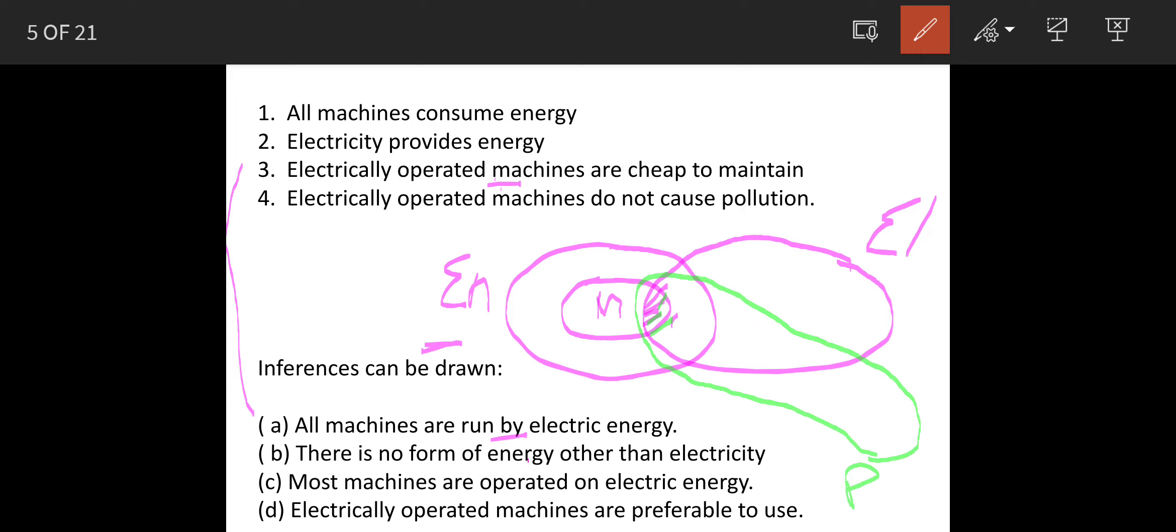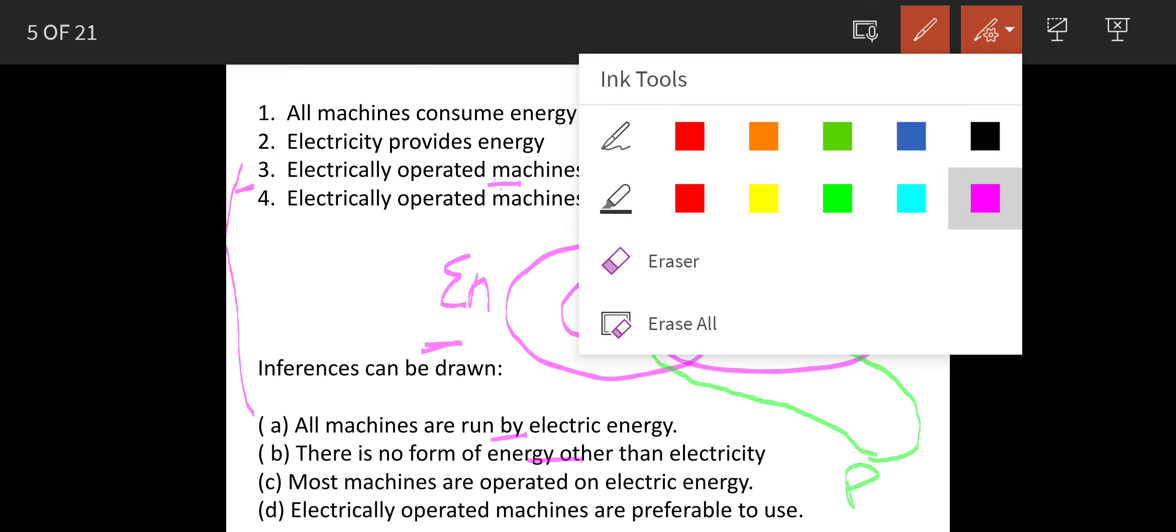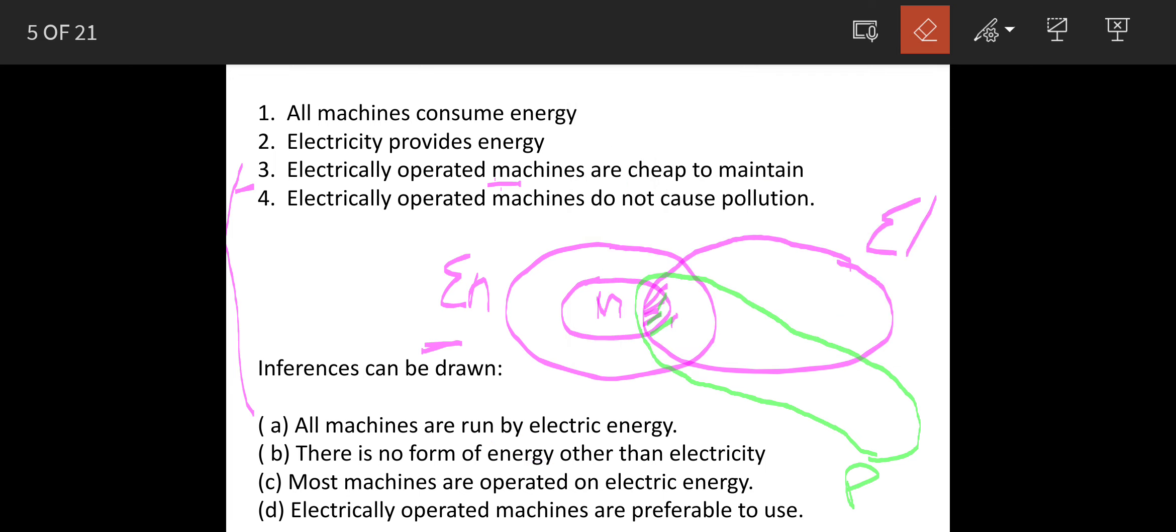There is no form of energy other than electricity. Again, see statement 3 - this is also wrong. So I will just keep marking them. One is incorrect, two is incorrect.